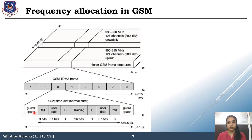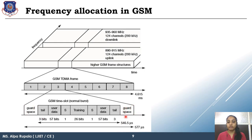Within the 577 microsecond time slot, 30.5 microseconds are used as guard space to prevent interference — 15.25 microseconds at the front and 15.25 microseconds at the tail. This leaves 546.5 microseconds available for user transmission.